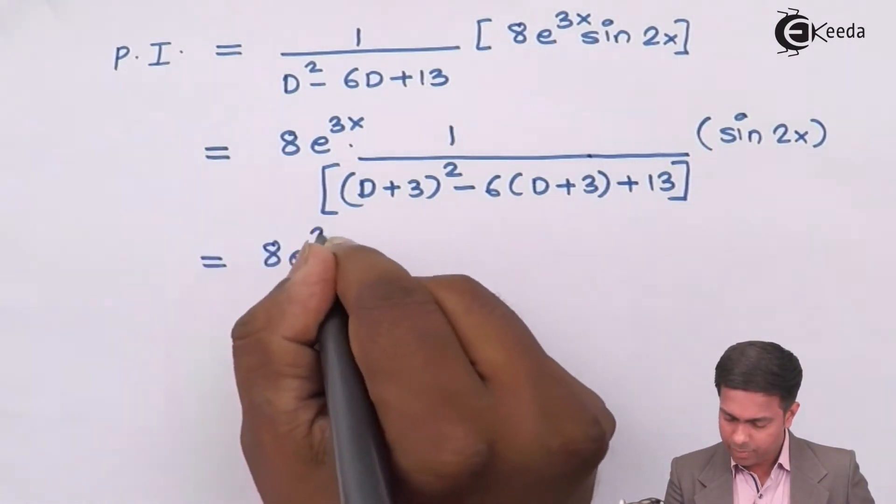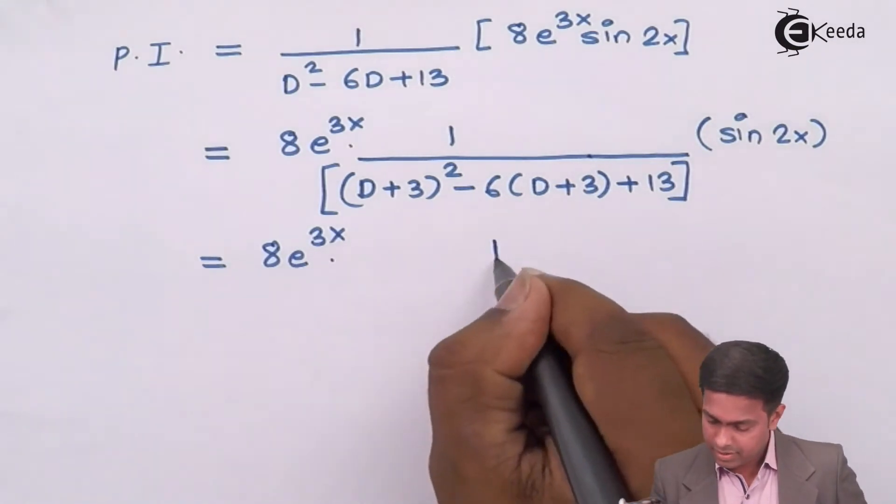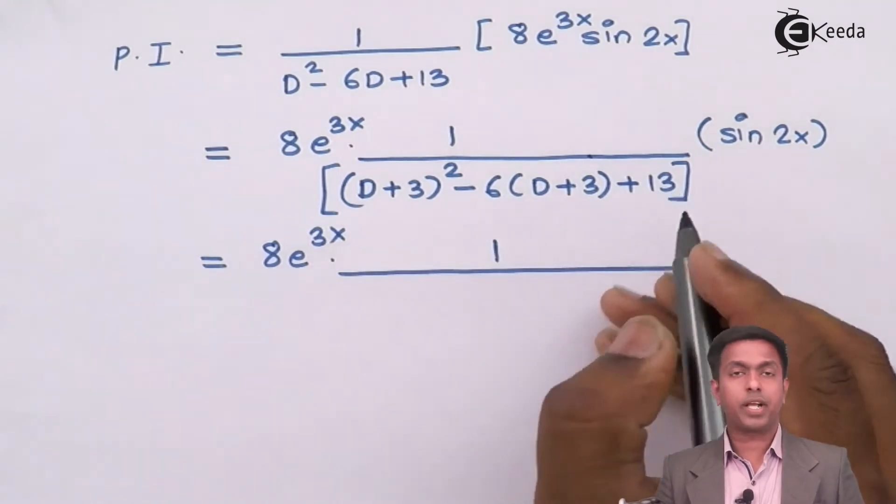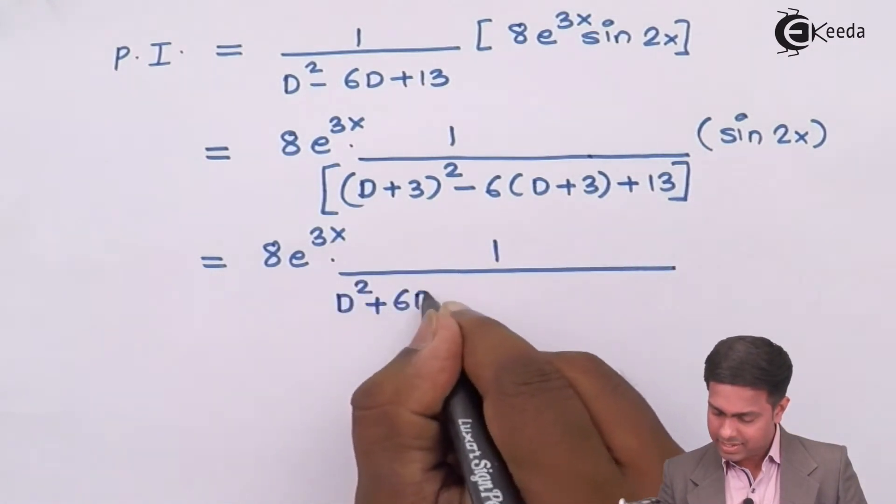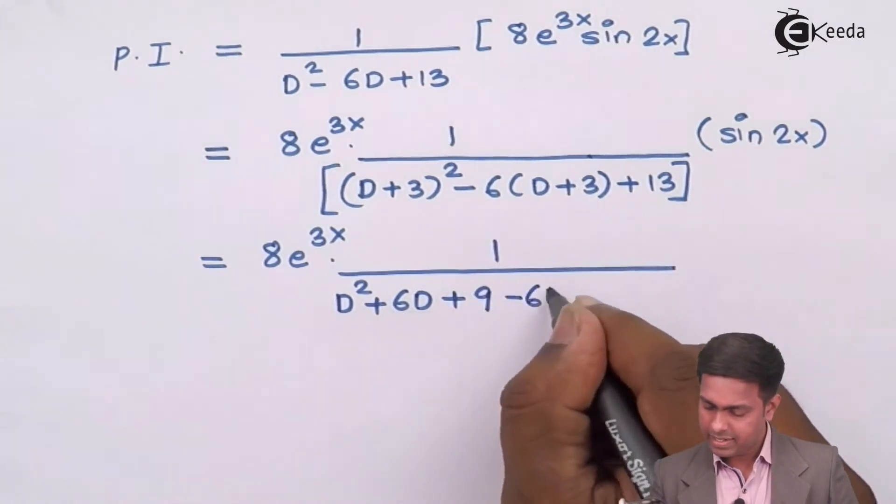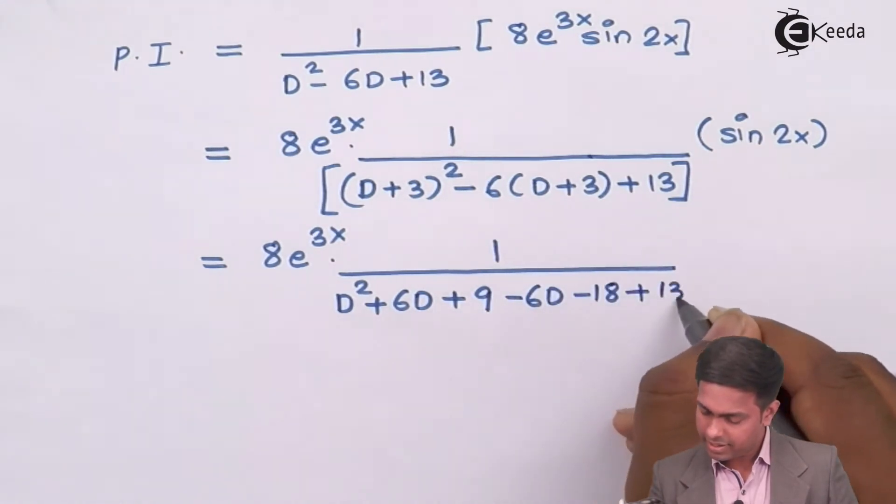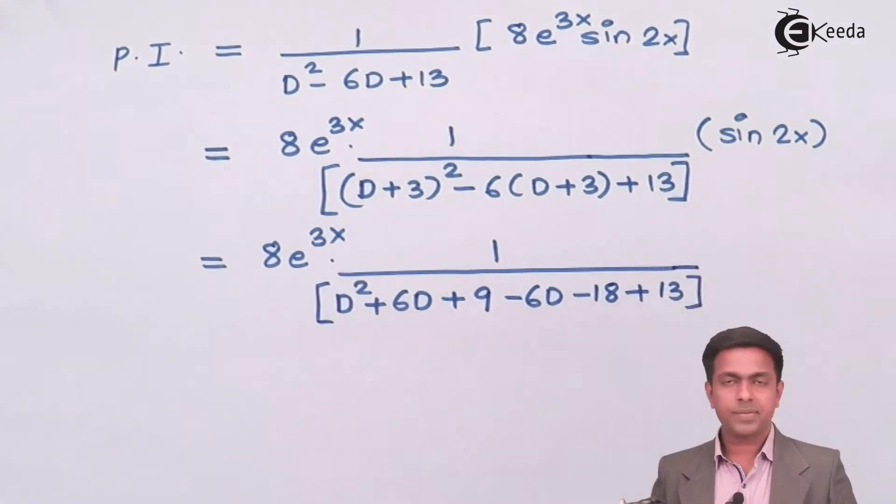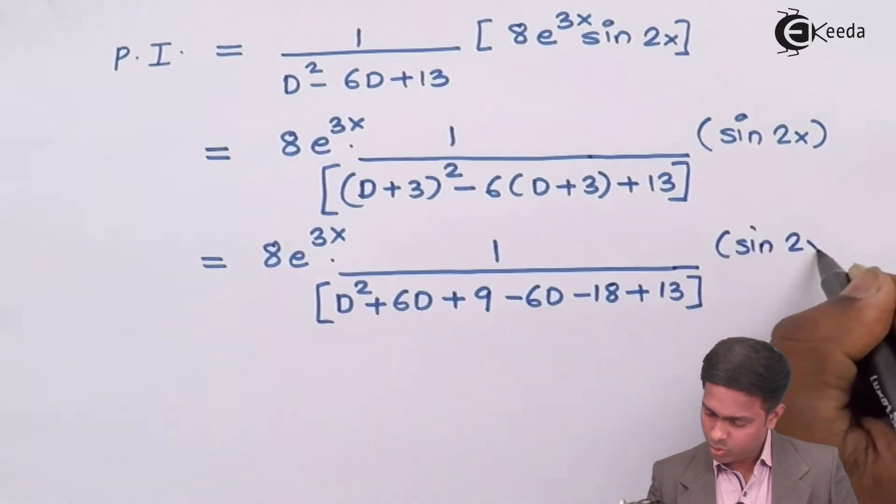8 e to the power 3x as it is. This will become D² + 6D + 9 this is -6D this is -18 + 13 into sin of 2x.